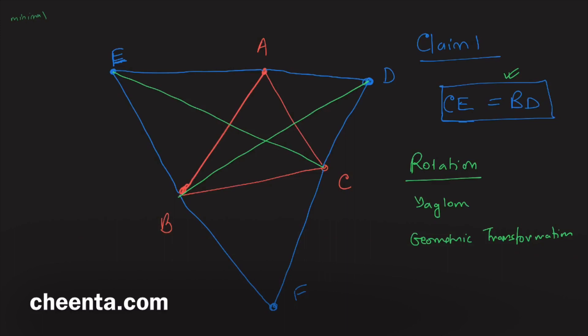To use rotation, we need to first find the center of rotation — that is a general problem-solving strategy. We want to show CE equals BD. If we can rotate CE and make it fall exactly on BD, then we are done, because rotation preserves length. There is a special name for this kind of transformation: they are known as isometries.